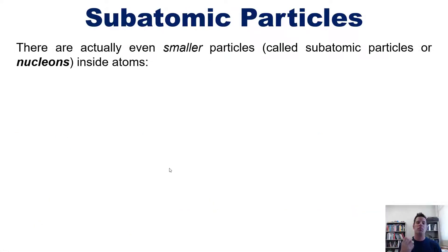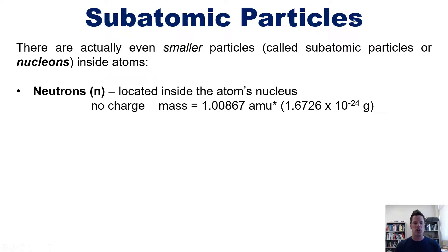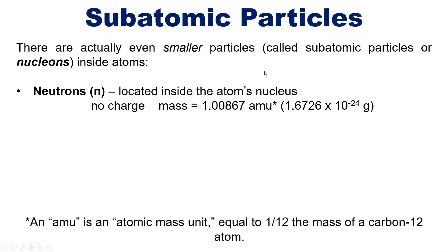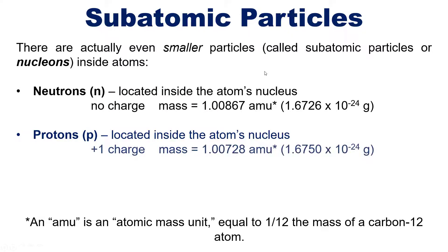As it turns out, there are even smaller particles than atoms, which I call subatomic particles or nucleons, that are inside the atoms. Specifically, neutrons are located inside the atom's nucleus. They have no charge and the mass shown right here. Now, the letters AMU are an abbreviation for atomic mass units. One atomic mass unit is equal to exactly one-twelfth of the mass of a carbon-12 atom - we'll talk about that in greater depth in a later chapter. Second are protons. They are also located inside the atom's nucleus, have a +1 charge, and this mass in AMU, which is pretty close, not exactly but pretty close, to the same as the mass of a neutron.